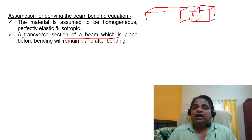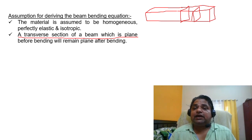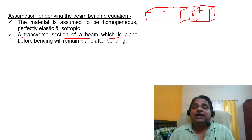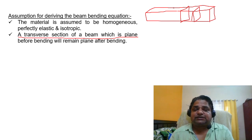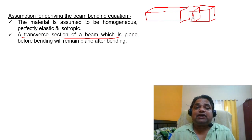The transverse section which is plane before bending remains plane after bending and is not distorted. Distortion only occurs when there is shear stress. Since we are considering no shear stress or shear force in simple bending, we assume there is no distortion and the perpendicularity of sections is maintained throughout.